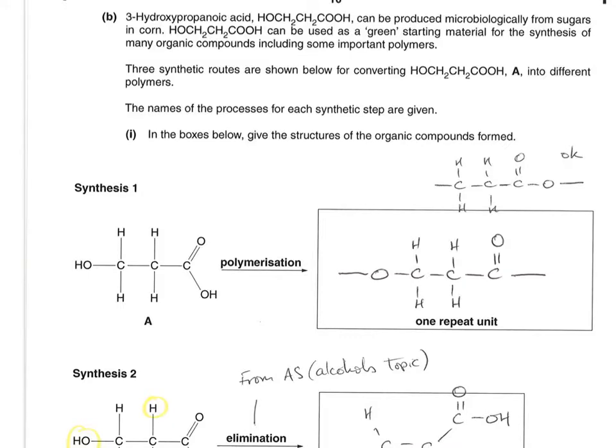The second part of the question moves away from carbonyls and starts testing knowledge on alcohols and polymerization. We're told about different synthetic routes for converting 3-hydroxypropanoic acid into different polymers. The first one, synthesis 1, is basically if we polymerize molecule A, which is the 3-hydroxypropanoic acid, what are we going to get? We have to draw one repeat unit for the polymer.